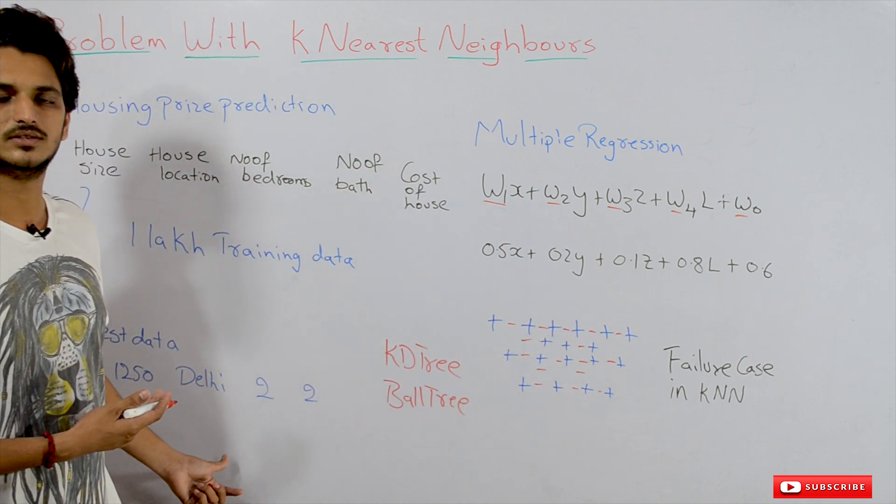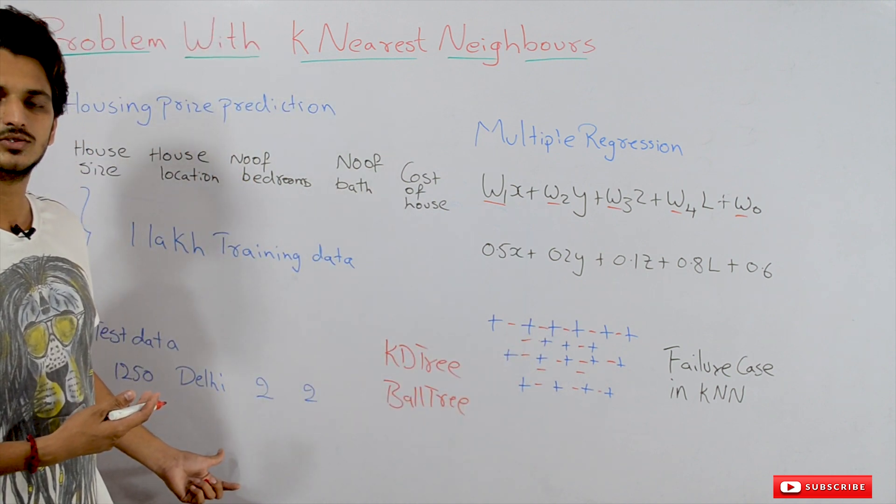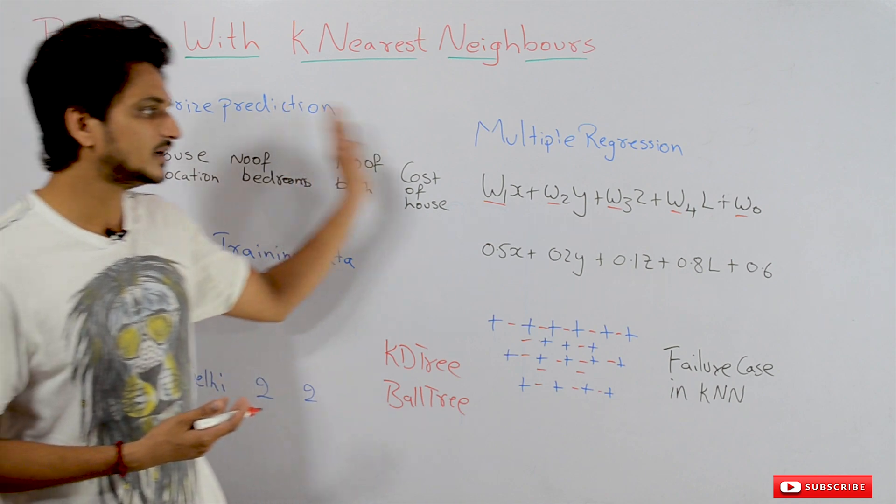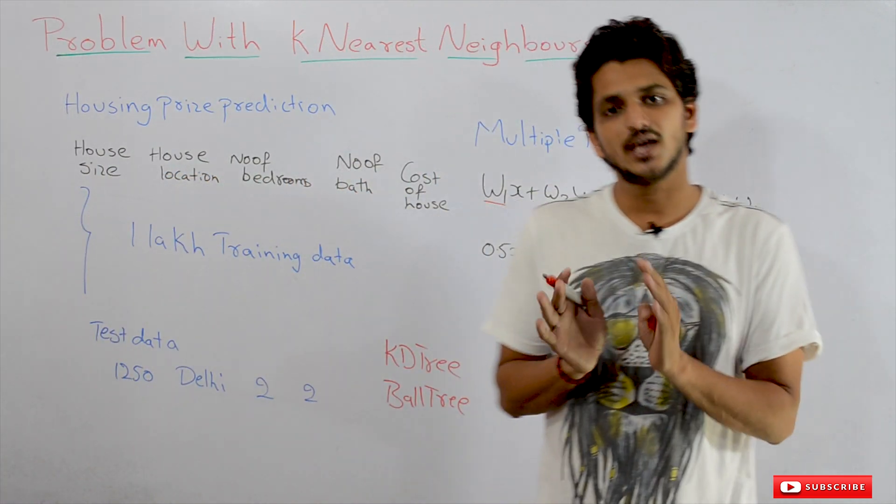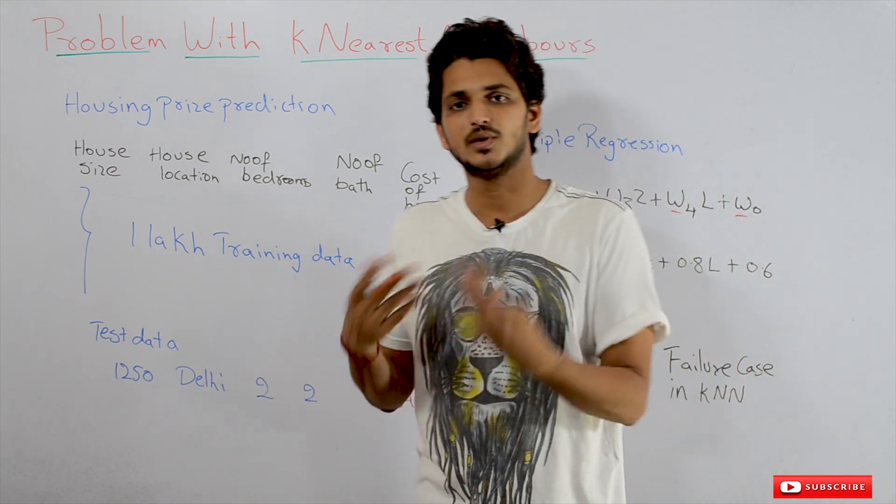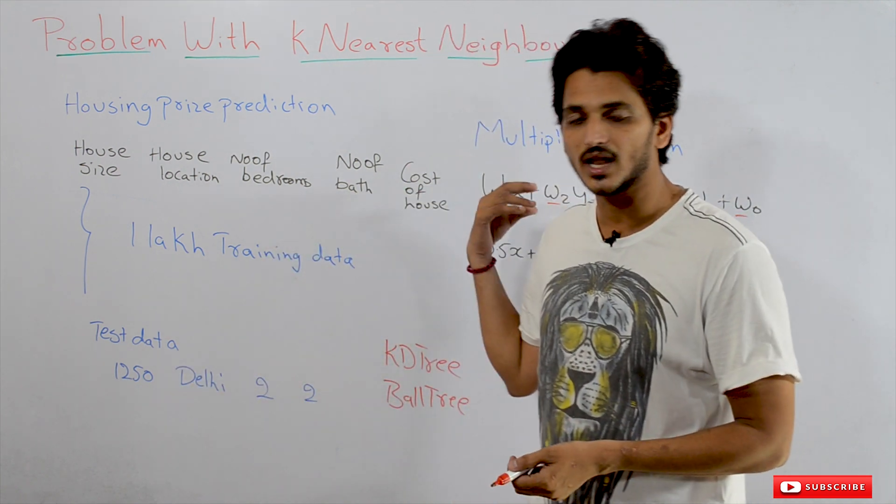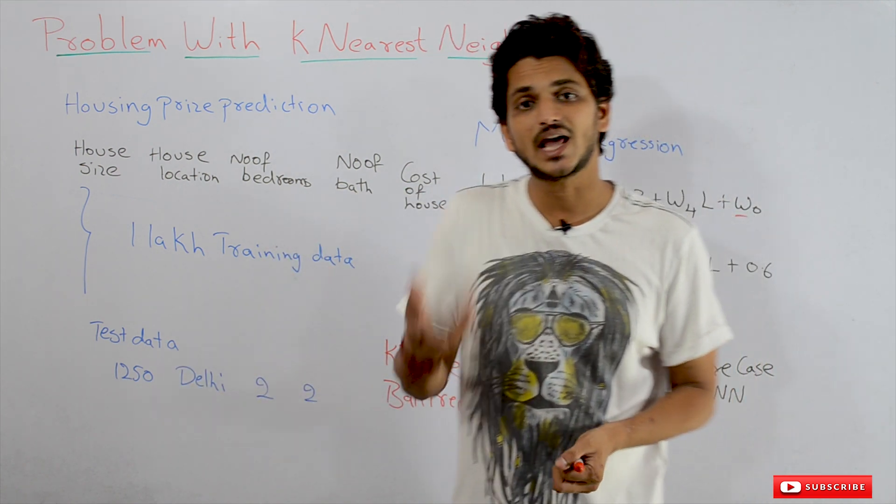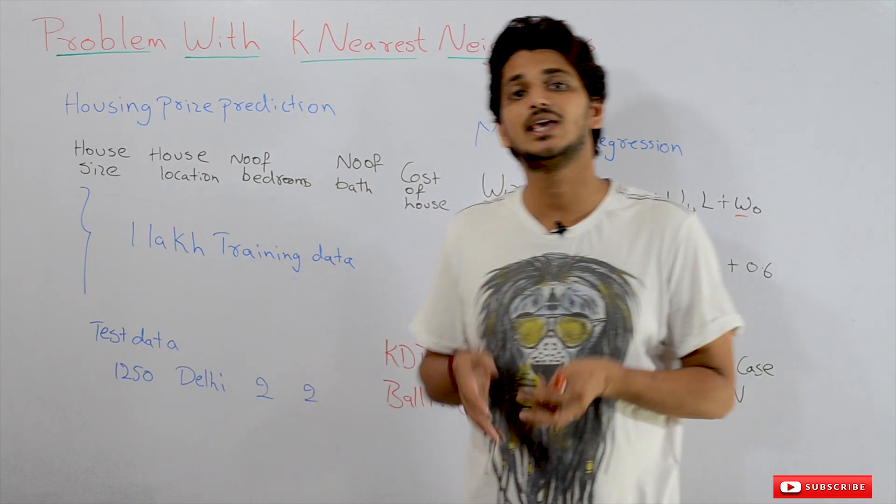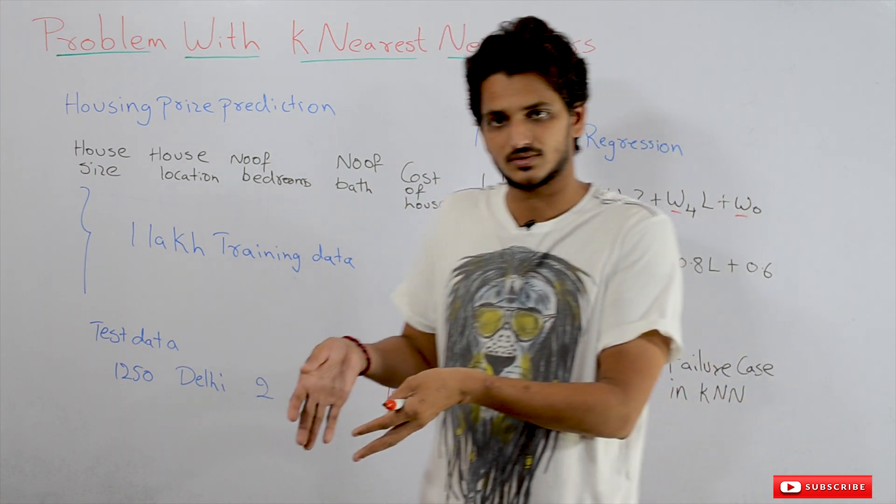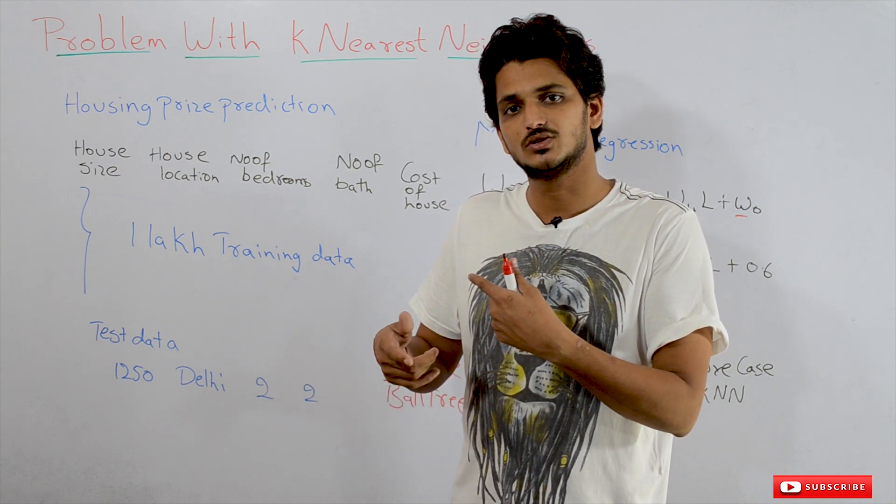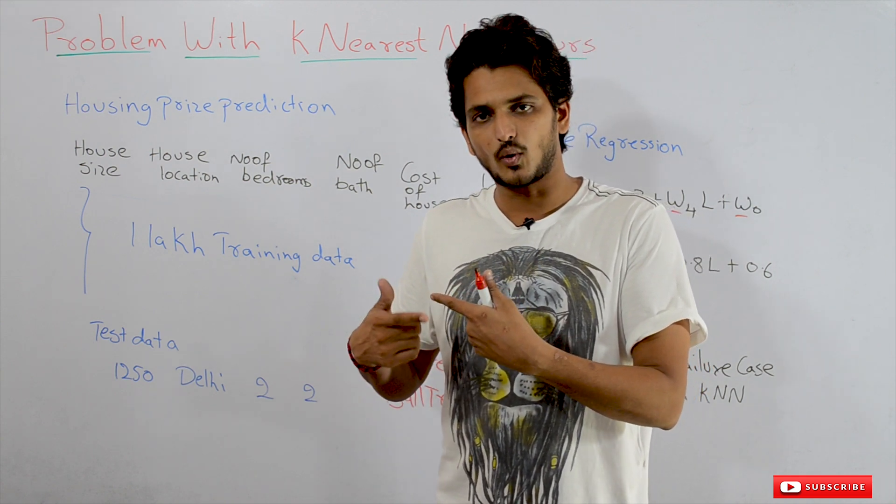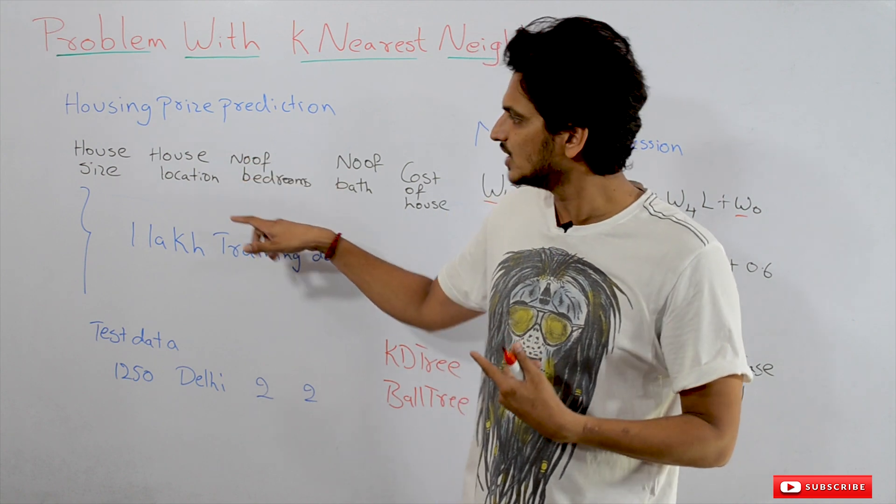This is not the case with K-Nearest Neighbors. We don't have any parameters to calculate the prediction. Each time, it has to identify k-nearest neighbors, which means it has to calculate the distance between all the points in the training dataset.